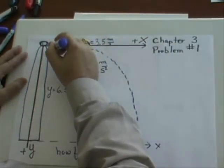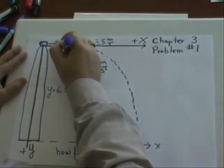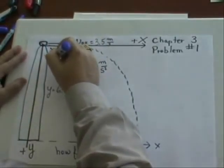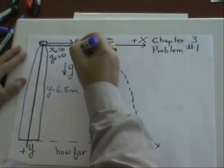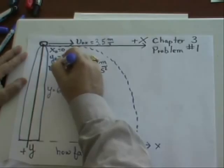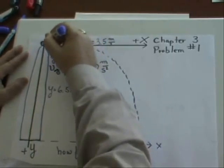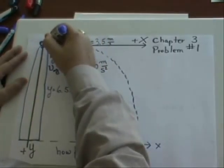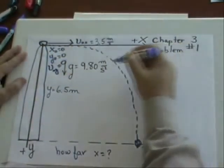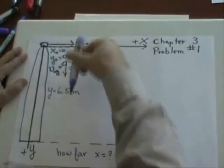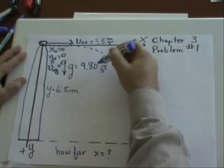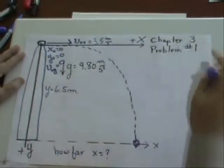We will call x naught equals 0 because that's where it started from. y naught is equal to 0. And we will also have v naught y equals 0 because there's no y part of the velocity. It's all x. He jumped horizontally. We'll also locate g as pointing straight down. The gravitational acceleration is straight down at 9.80 meters per second squared.